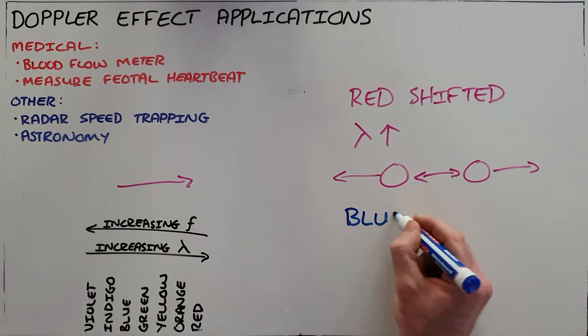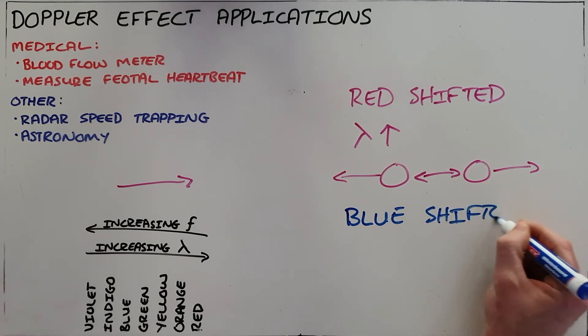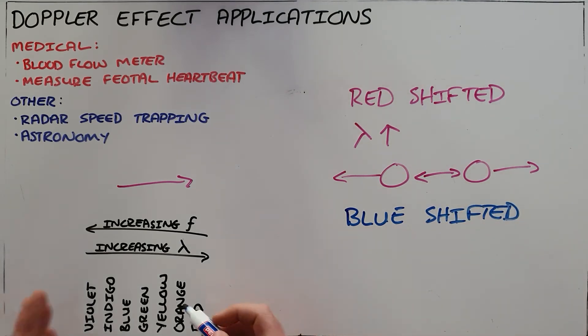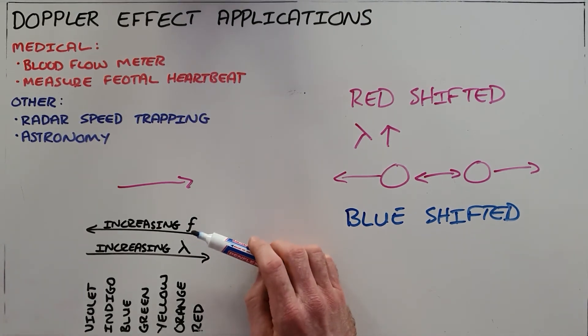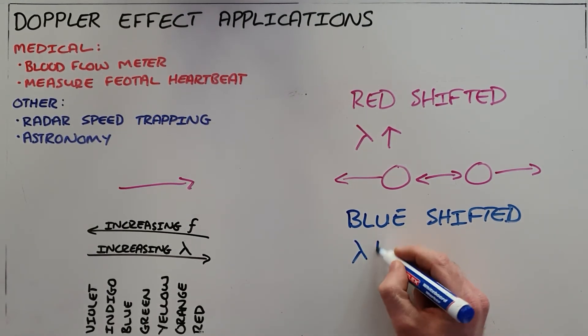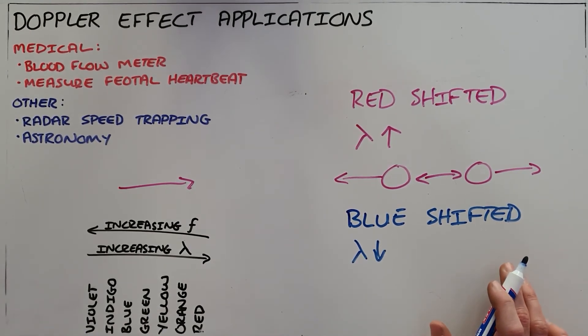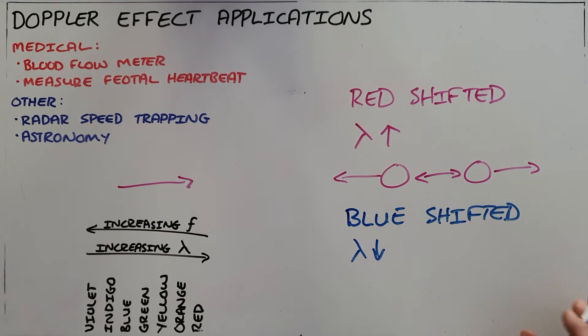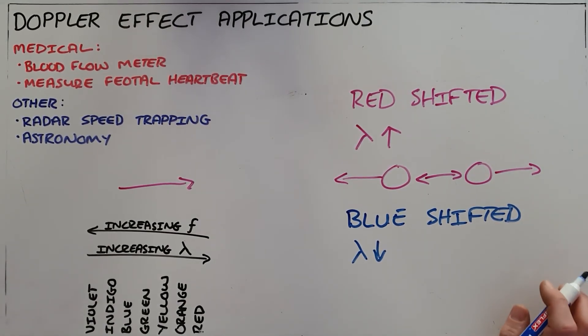The opposite of a red shift would then be a blue shift, which is just what happens when two objects move closer together. As they move closer together, the wavelength decreases therefore the frequency increases and along with that we say that the light becomes more blue and then you can say that sources and observers where there is a blue shift present, those objects are moving towards each other.